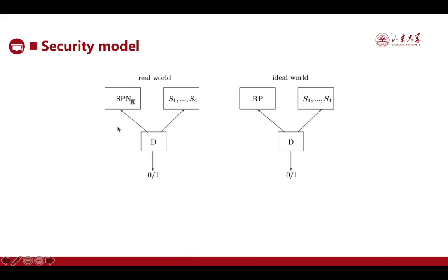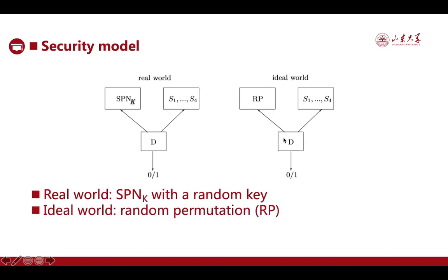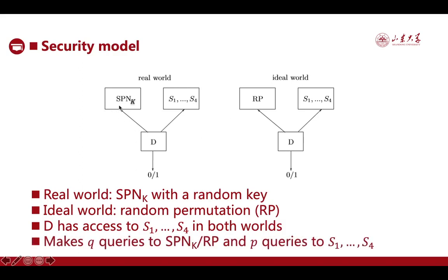Here are the security models of the real world and the ideal world. In the real world, distinguisher D has access to SPNK with a random key K. In the ideal world, distinguisher D has access to a random permutation. In both worlds, D has access to the four S-boxes S1, S2, S3, and S4, and makes Q queries to SPNK or RP and P queries to S1 through S4.